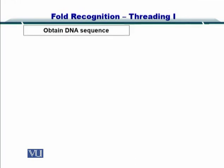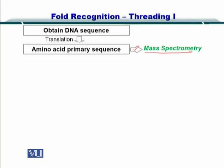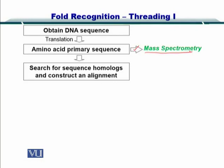There can be a case where you have the DNA sequence and you translate it to get the amino acid primary sequence — this can be done using mass spectrometry — and then you search for homologues and construct an alignment. This was the condition necessary for homology modeling.